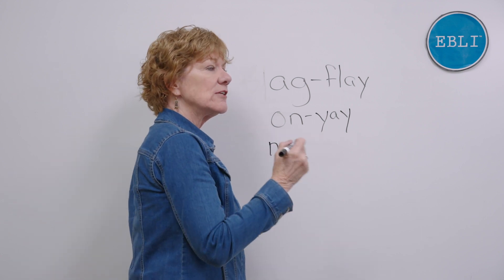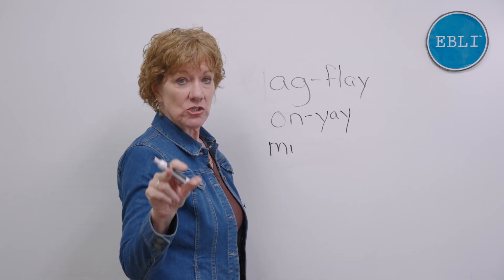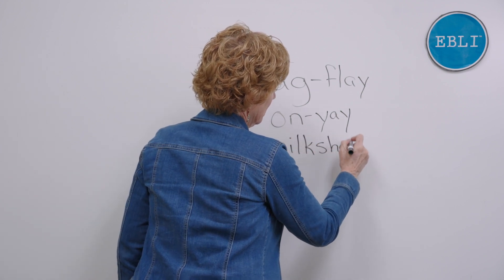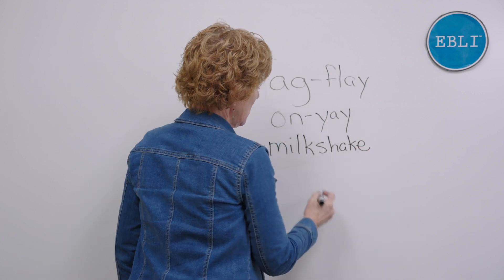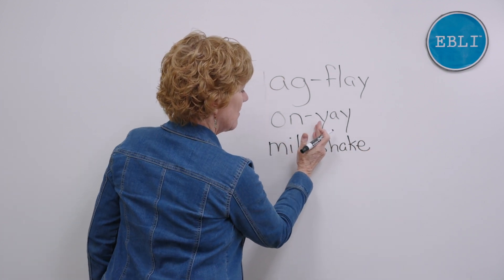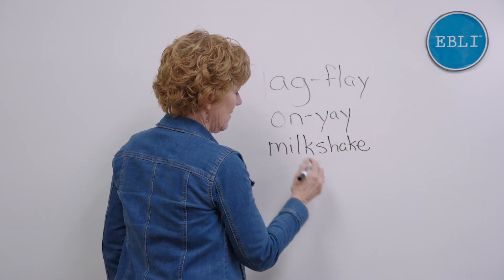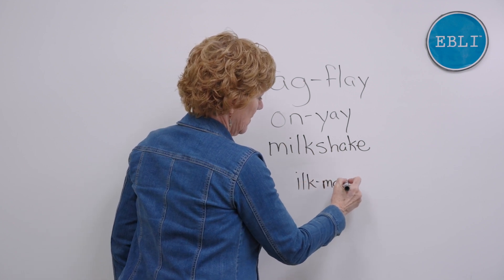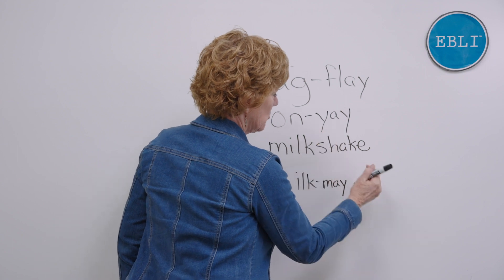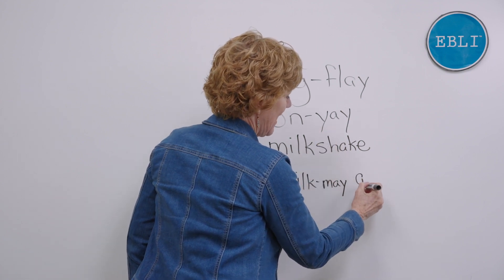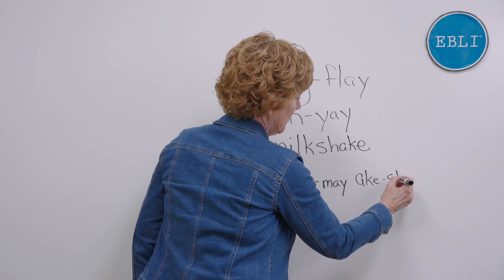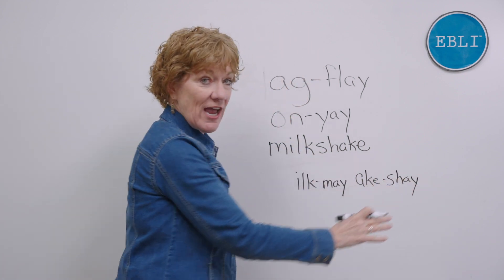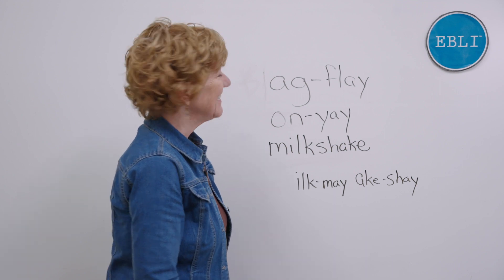If you have a compound word like highchair or cupcake — two words put together — let's say milkshake. You take away up to the vowel of the first word: so that gives you ilk, then MAY. And shake — you take away the SH and put it at the end, so you'd have ache, shay. So milkshake is ilkmay-acheshay.